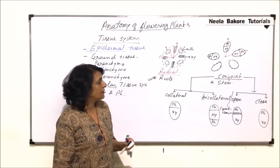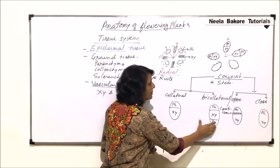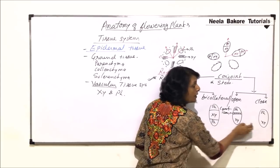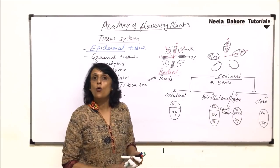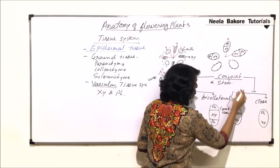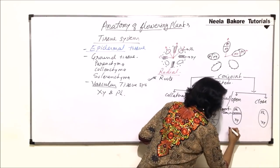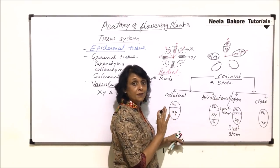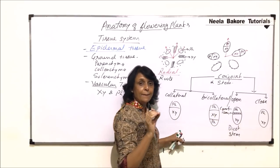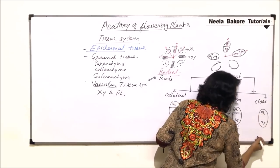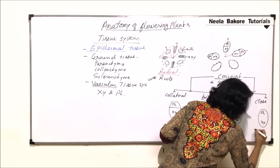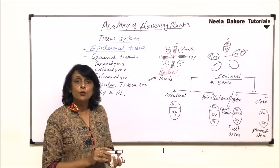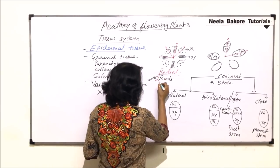Conjoint vascular bundles can be collateral or bicollateral on the basis of arrangement of xylem and phloem, and open or closed on the basis of presence or absence of cambium. Open conjoint vascular bundles are characteristic feature of dicot stem — conjoint is of stem, and if there is a cambium strip it is dicot stem. Closed conjoint bundles are found in monocot stem.